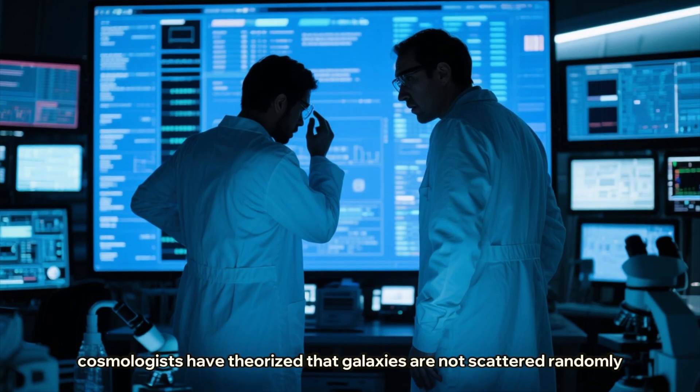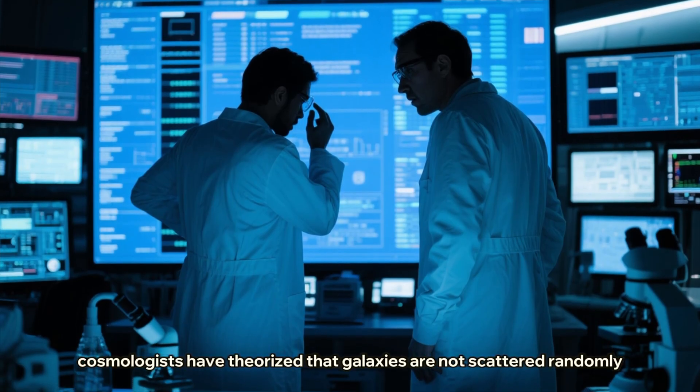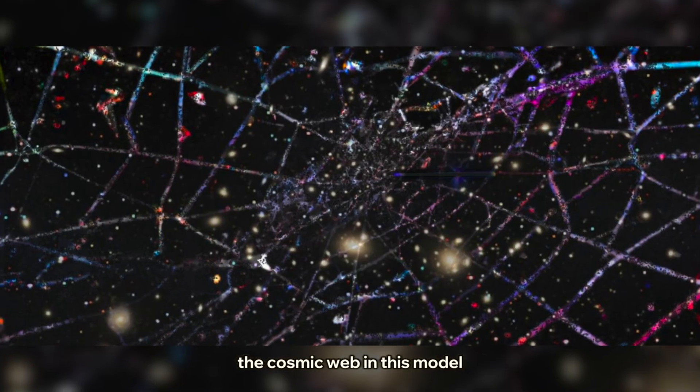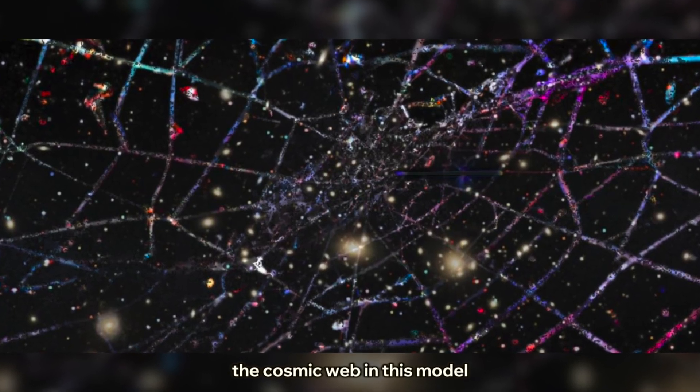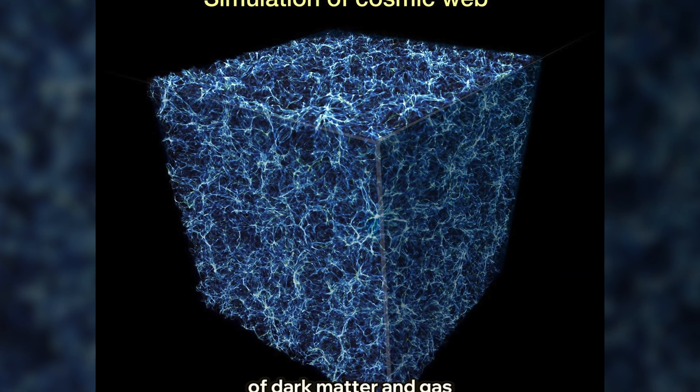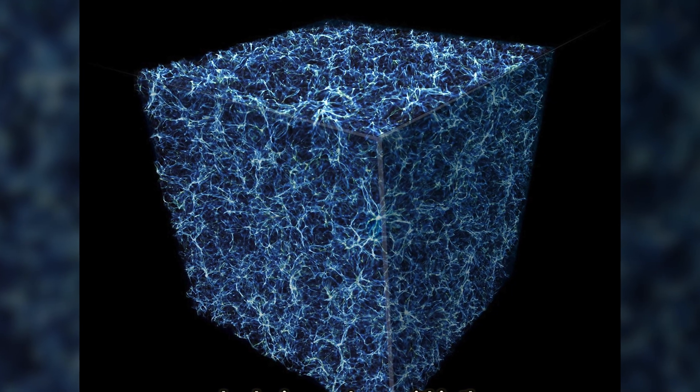For years, cosmologists have theorized that galaxies are not scattered randomly, but are organized into a colossal structure, the cosmic web. In this model, the universe is a network of unimaginably long filaments of dark matter and gas, and galaxies are born within them.